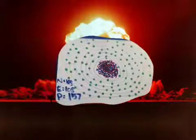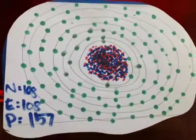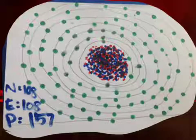First of all, I'm going to talk about the cloud diagram of HASSIUM. And as you can see here, there are 108 neutrons and 108 electrons and 157 protons. So basically, the atomic number of this element is 108.